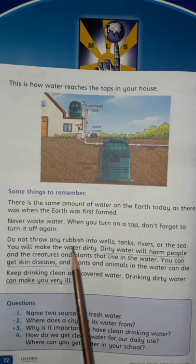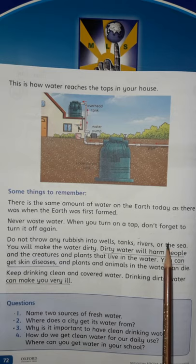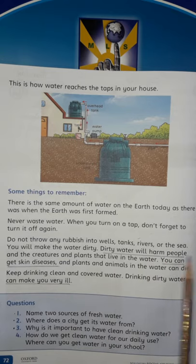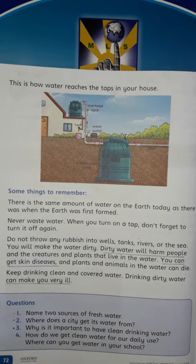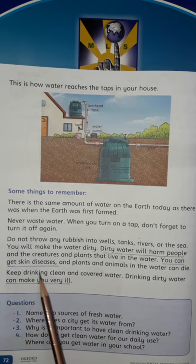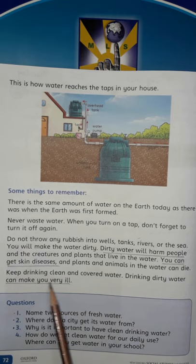Also, if we throw rubbish into wells, tanks, rivers, or sea, it can cause water pollution. Dirty water will harm people and the creatures and plants that live in water. Sea plants and animals cannot live in dirty water. You can get skin diseases, and plants and animals in the water can die. Keep drinking clean and covered water. Drinking dirty water can make you very ill.